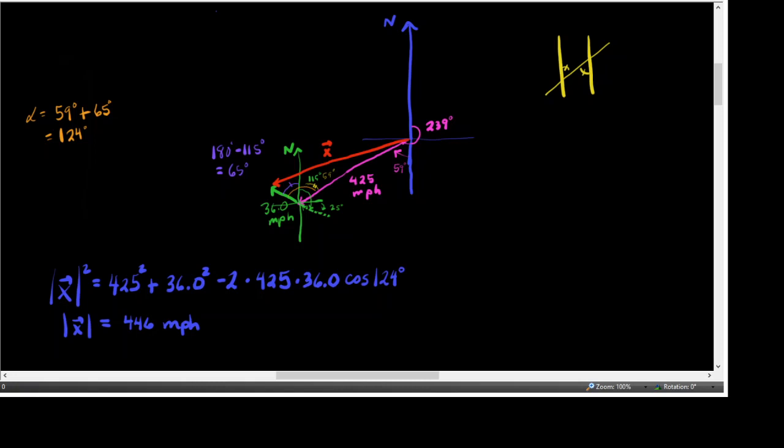Now, my drawing has become extremely messy over there. It's kind of hard to see. So I'm going to try to draw another version of it over here and not draw as much stuff with it. So this is the 36. This is the 425. This is now something that rounded to 446. And this angle here was 124 degrees.